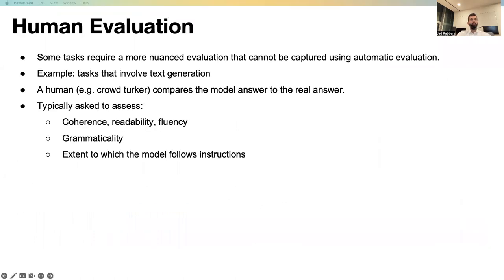We just discussed automatic evaluation. However, sometimes we have tasks that require a more nuanced evaluation that cannot be captured using automatic evaluation. If we're looking at tasks where there is generated text and we want to really assess the quality of this text, this could be hard to do using automatic evaluation only. So we would hire human annotators or human judges or, for example, crowd workers and ask them to compare the output of the model to a real or gold output.